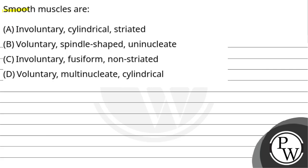Hello, let's see the questions. Smooth muscles are option A, involuntary, cylindrical, striated, option B, voluntary, spindle-shaped, uninucleate.